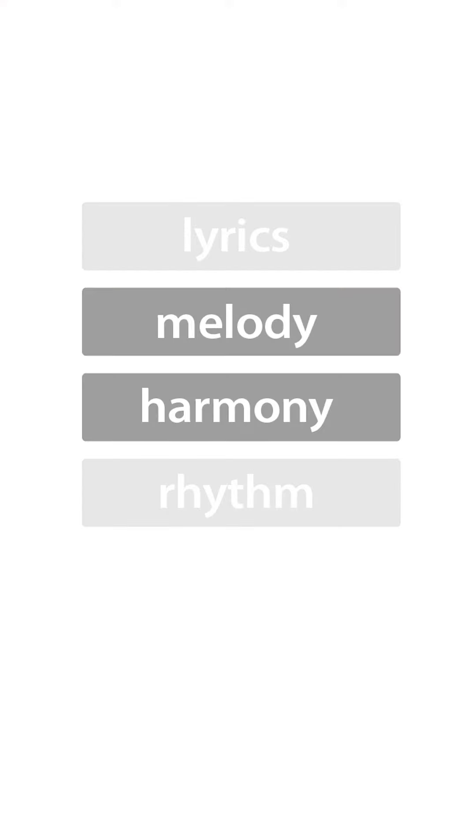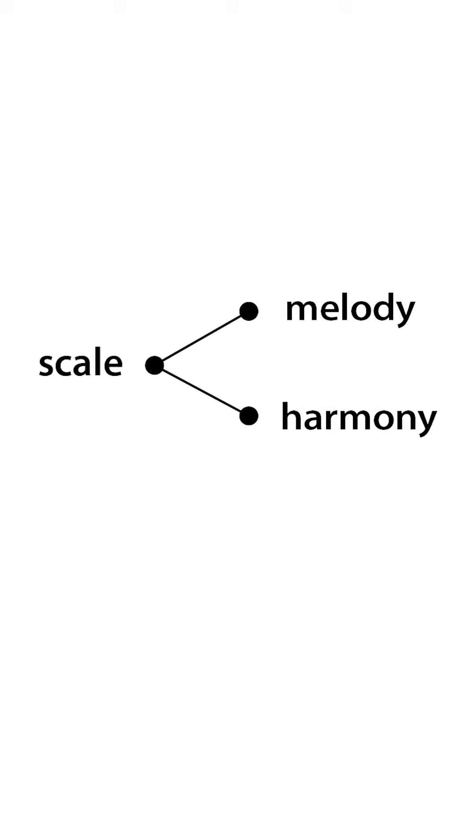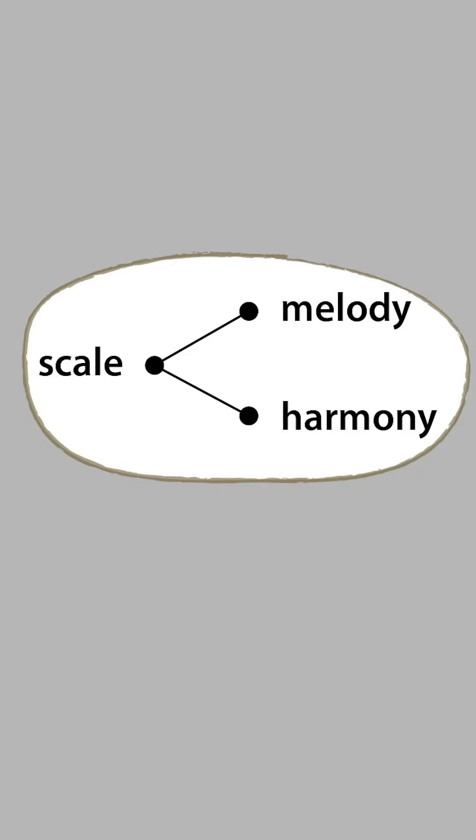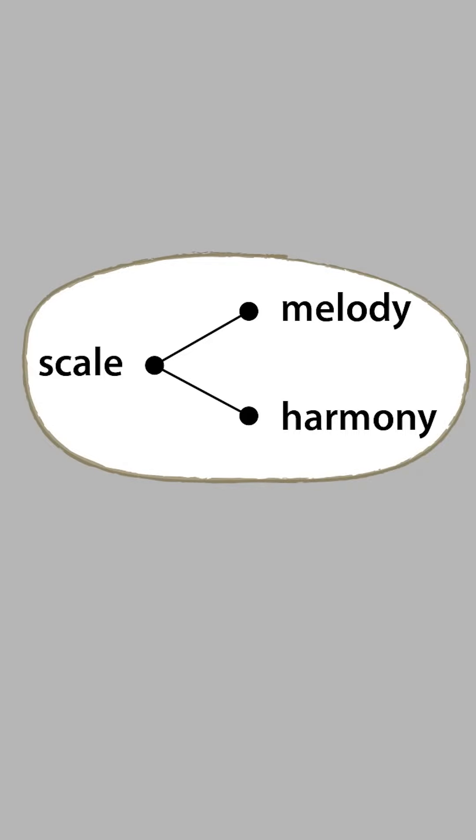But two of the most interrelated layers are the melody and the harmony, because both stem from the same source, which is the underlying scale or mode of a song. And much of music theory focuses on this special connection. To show you what I mean, let's look at the major scale, which is the most common source pattern for songs.